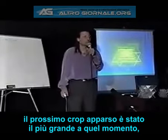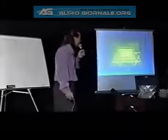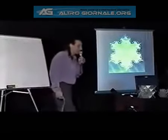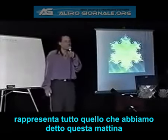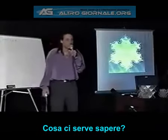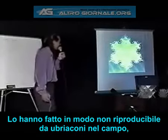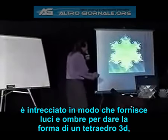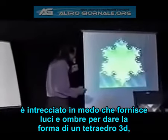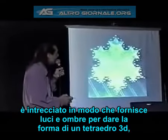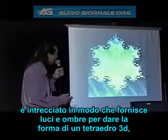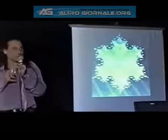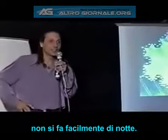The next crop circle that occurred was the largest crop circle to date at that time. It was everything we've been talking about this morning. They even made it in a way that's not reproducible by people going out drinking and stomping around, because all the hay is woven in a way that makes effects of light and shadow that give the vertices and edges of a 3D tetrahedron. That is not easily done in the middle of the night.